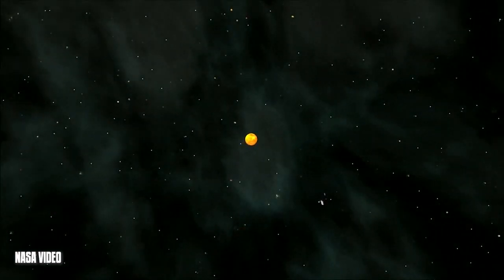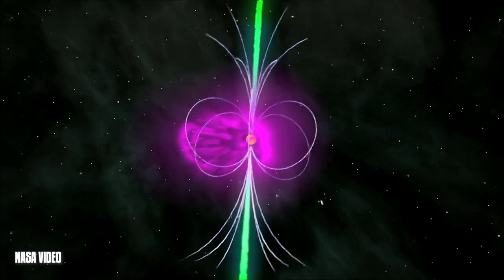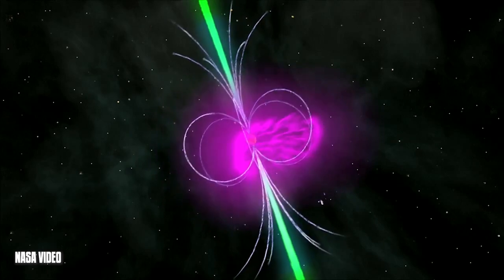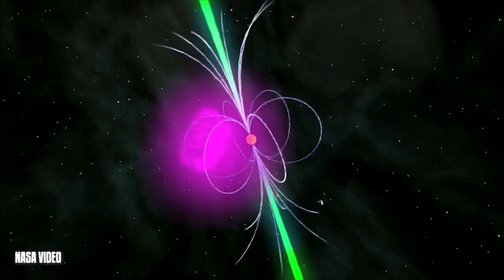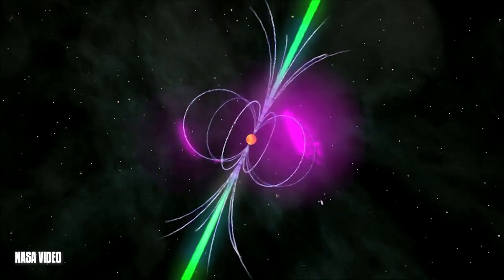Pulsars are neutron stars that are spinning and they have very strong magnetic fields. These very strong magnetic fields drive the emissions of jets that come out of the north and south magnetic pole. But the north and south magnetic pole of the neutron star is not always aligned with the spin axis. It's the same on the Earth. Our magnetic north pole does not line up with our geographic north pole.